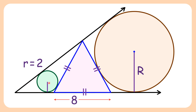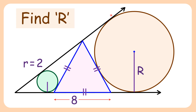In today's question, we are given two circles of radius 2 centimeter and r centimeter. In between these circles we have an equilateral triangle with side length 8 centimeter, whose sides are tangent to the small circle. Also, from an external point, two common tangents are drawn to these two circles. Using this data, we have to find the radius of the big brown circle, or the value of r.